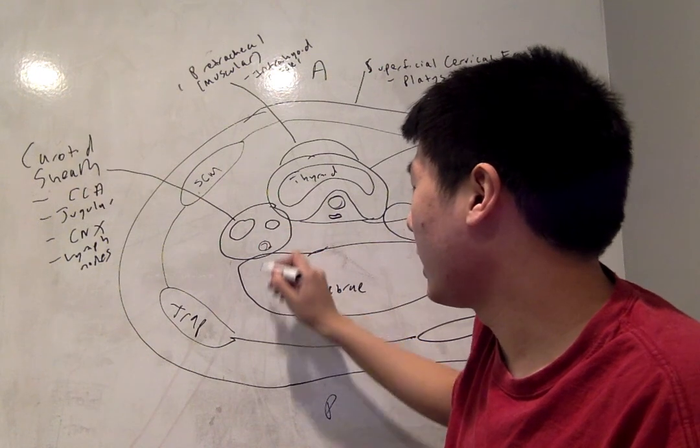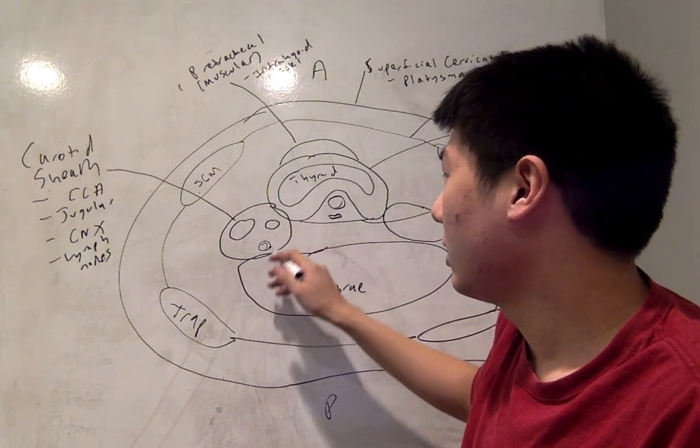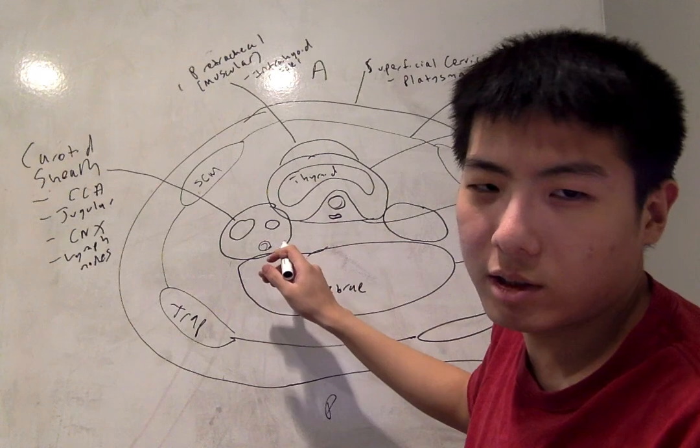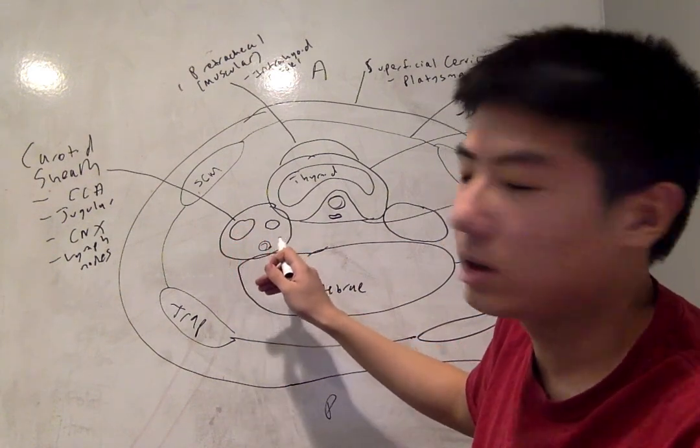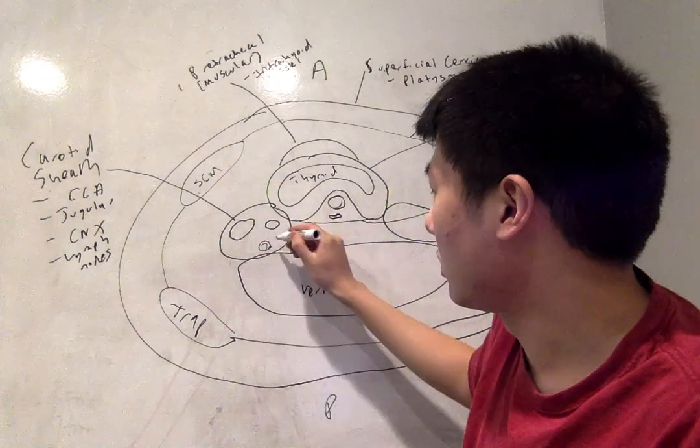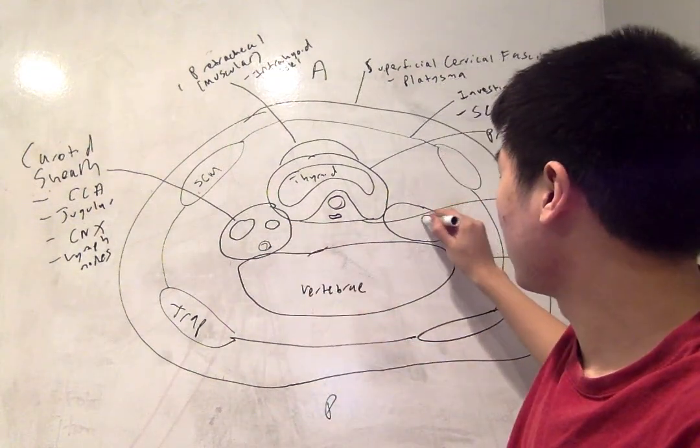So medially we have the common carotid. And then posteriorly to both the jugular and common carotid, we have the vagus nerve CN10. So this is going to be the same for each side.